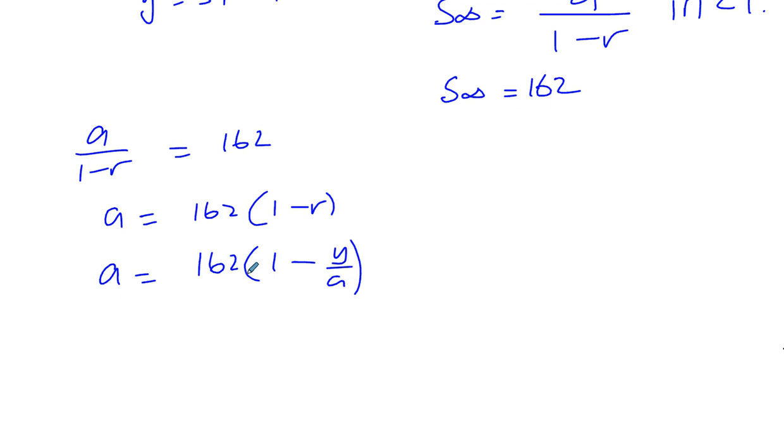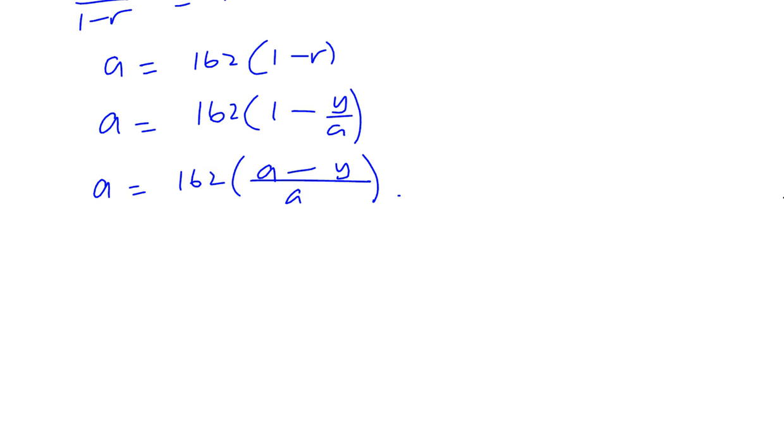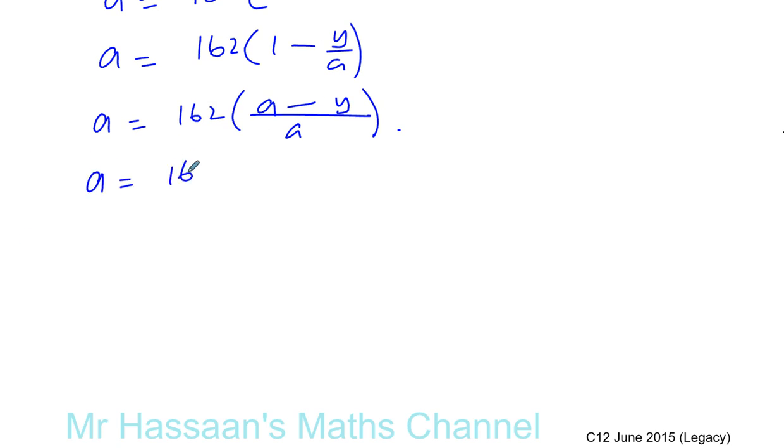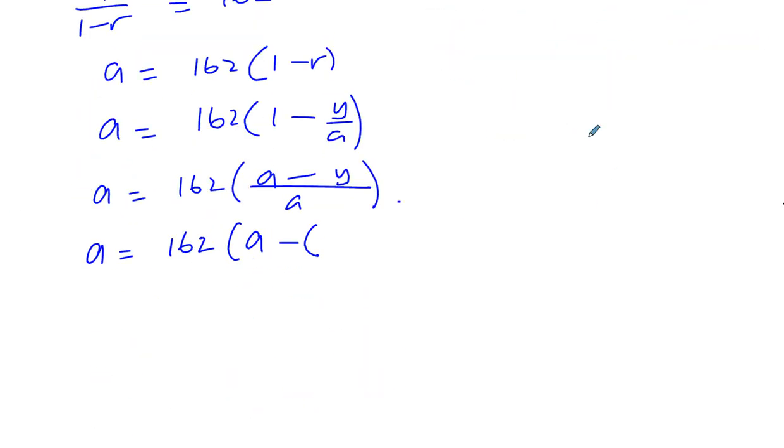Let's make that into one fraction. So A is equal to 162 times A minus Y over A. Now I can replace this Y with 34 minus A. So we can continue on here. A is equal to 162 times A minus 34 minus A over A.